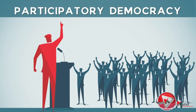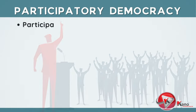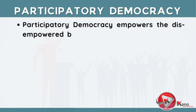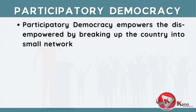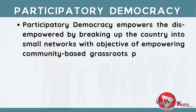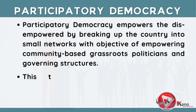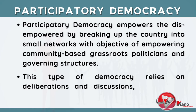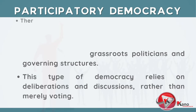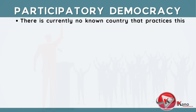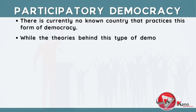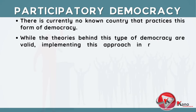The exact opposite of an authoritarian democracy is a participatory form of democracy. There are different types of participatory democracy, all of them aimed at creating opportunities for all members of the population to participate meaningfully in the decision-making process. Participatory democracy empowers the disempowered by breaking up the country into small networks, with the objective of empowering community-based grassroots politicians and governing structures. This type of democracy relies on deliberations and discussions rather than merely voting. There is currently no known country that practices this form of democracy, as implementing this approach in real life is challenging.